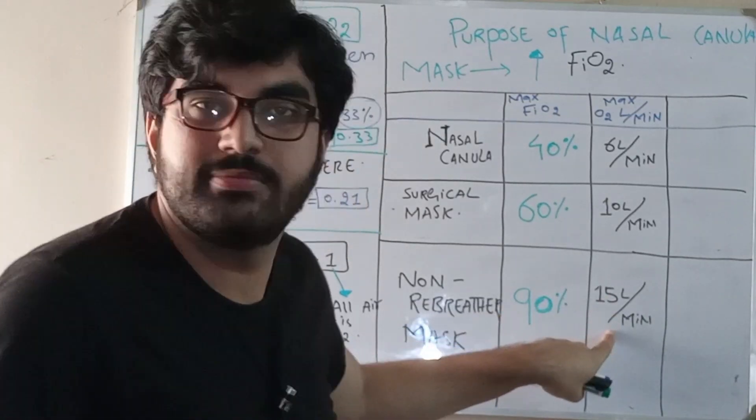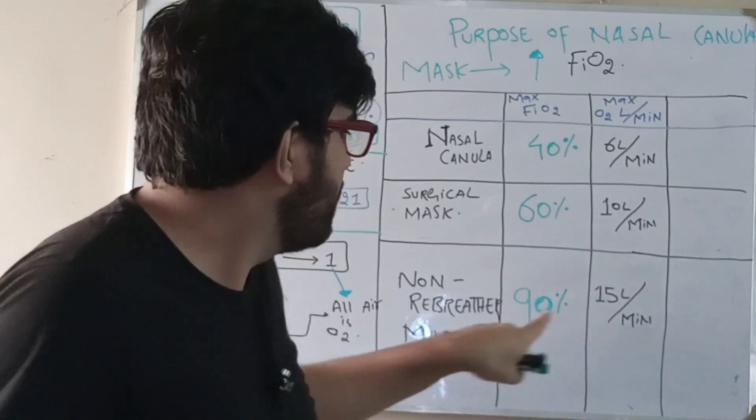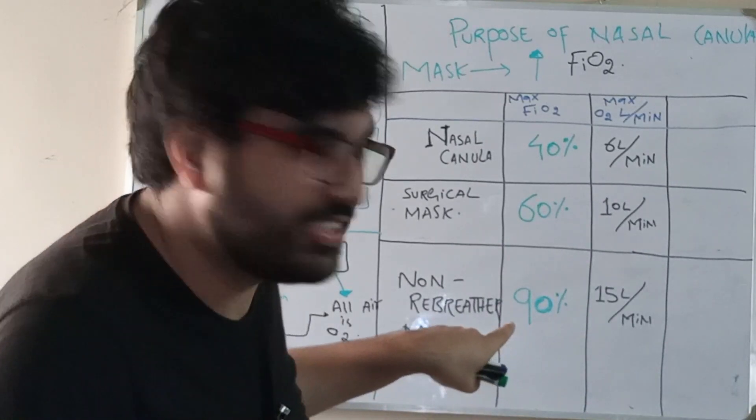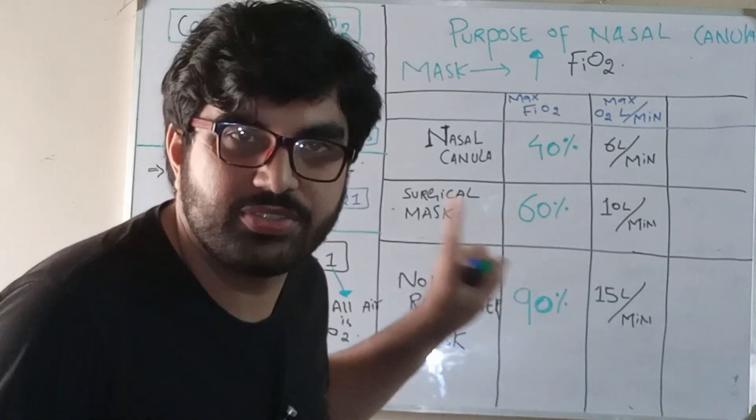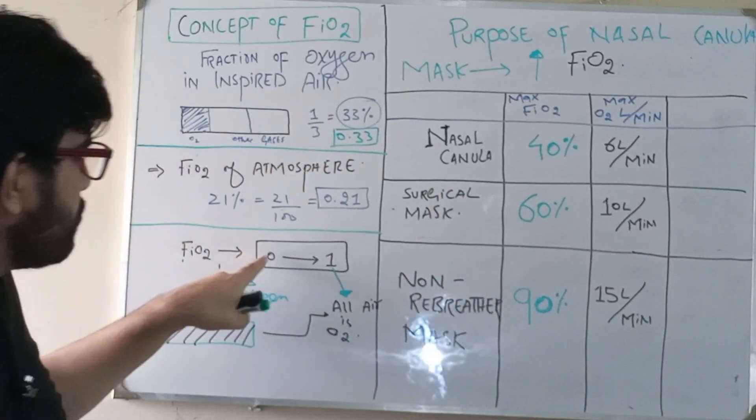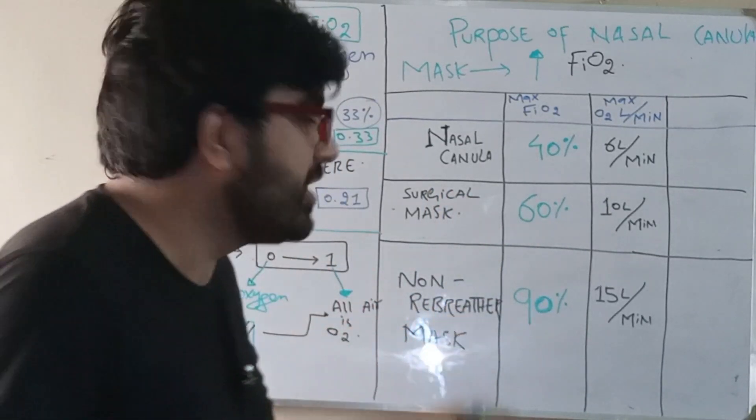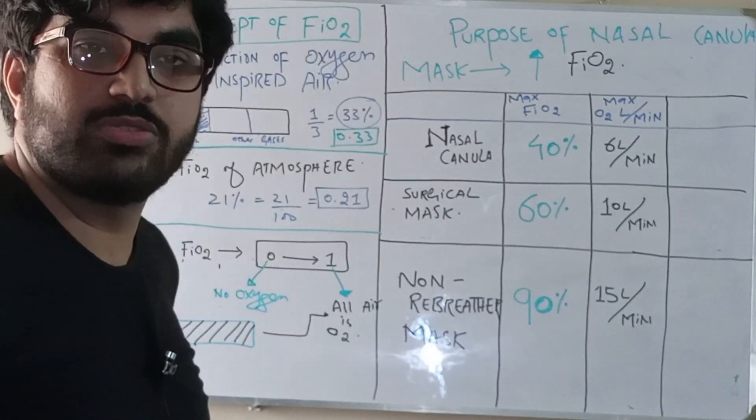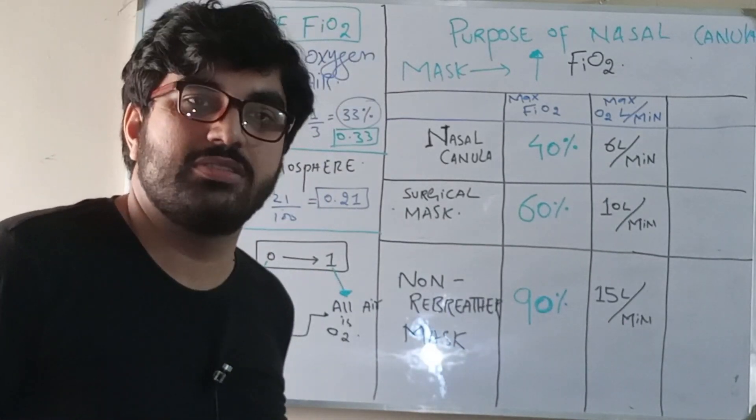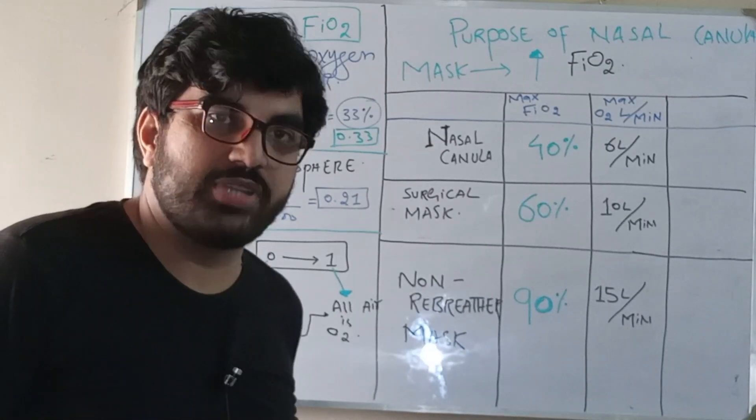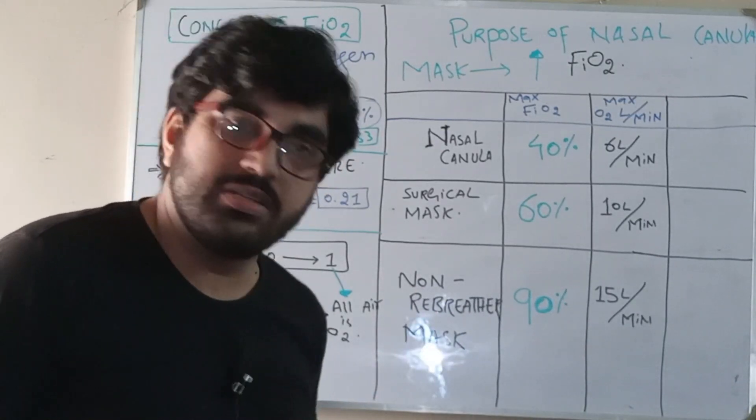How much oxygen you should give? 15 liters per minute. And FiO2 it delivers is 90% or 0.9, almost equal to the maximum. Now if unfortunately the patient is not achieving the maximum SATS even on this, what is the best next step?